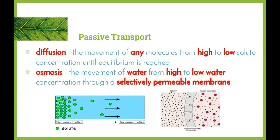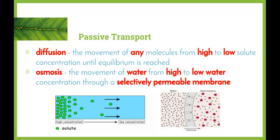We have the two types of passive transport. Diffusion is the movement of any molecules from high to low solute concentration until equilibrium is reached. As we can see here, there is a high concentration of green solutes on the left-hand side and a low concentration towards the right, so the green solutes will spread out across the whole solution until there's an equal amount throughout the whole area.